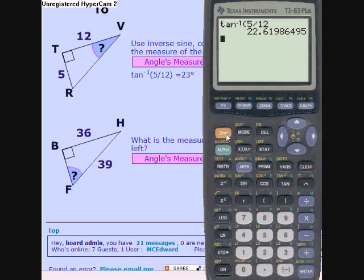So in this case, we would do second sine, opposite 36 divided by 39, and get a 67 degree, about a 67 degree angle.